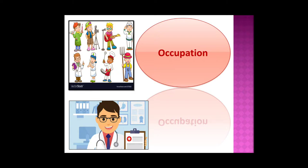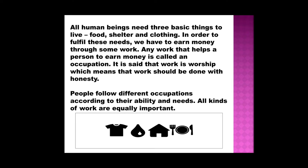Occupation helps to earn money for livelihood. All human beings need three basic things to live: food, shelter and clothing. These are the most important things that all people need in this world to live. They need food to survive. They need shelter, a house to live. They need clothes to wear, to protect them from heat and chilled winter. In order to fulfill these needs, we have to earn money through some work.